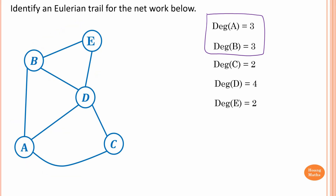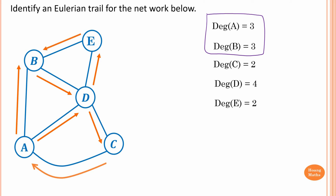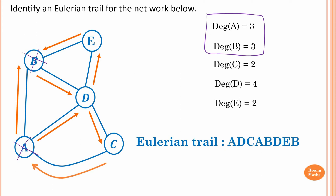Or, I go from A to D, and then from D to C, and C to A, and A to B, and B to D, and D to E, and E to B. So this time I start at A and I finish at B, and I visit every edge once. So this is an Eulerian trail.